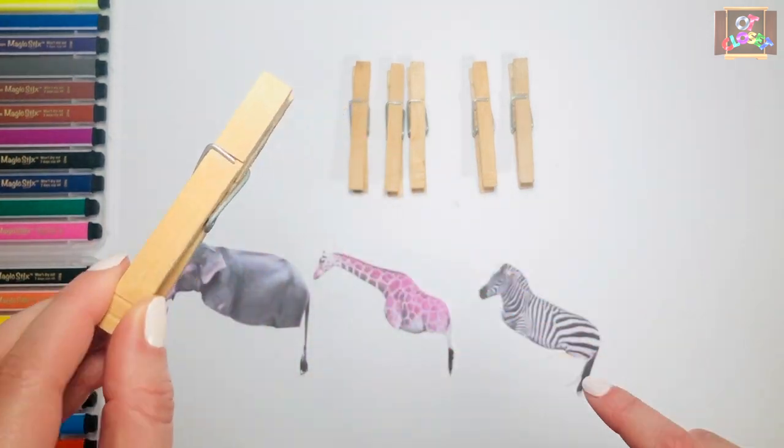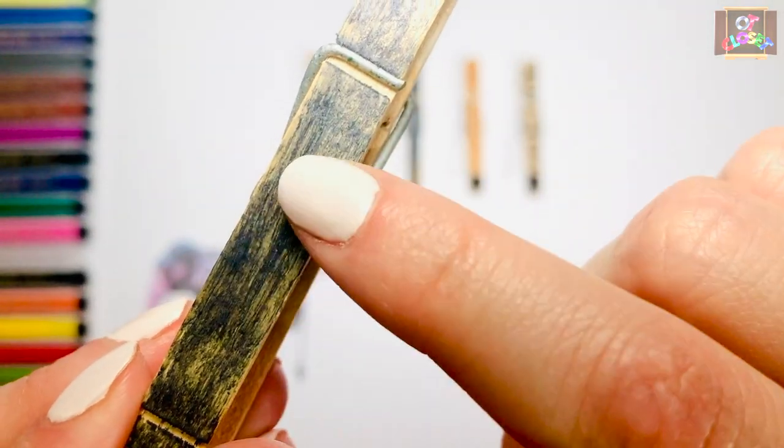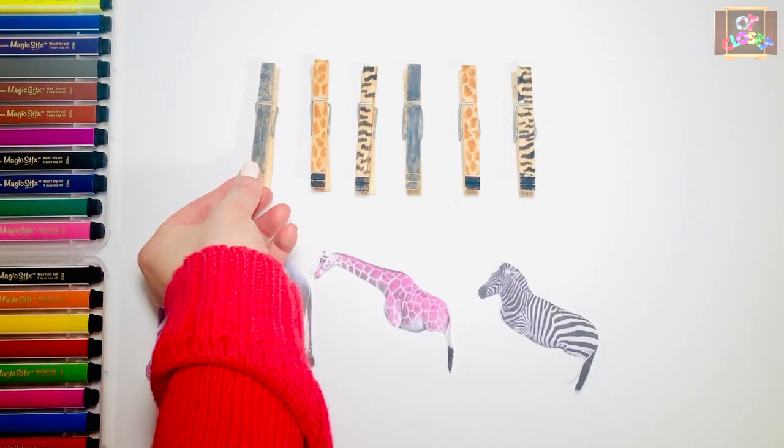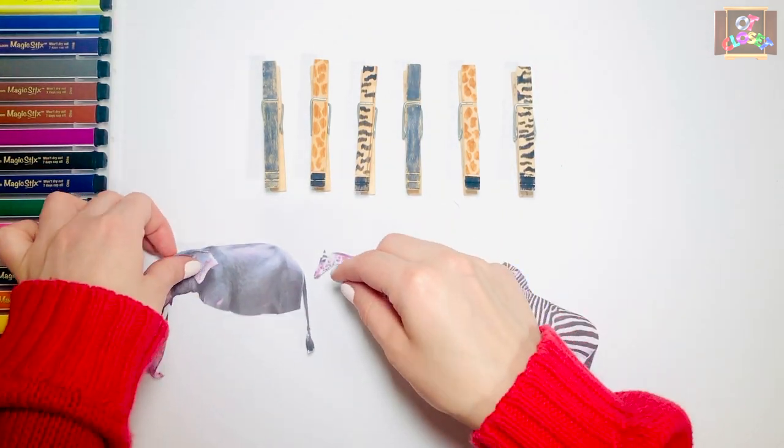Let's color the clothespins to correspond to the animals you have. Each animal will get two clothespins for their feet.